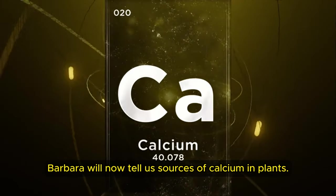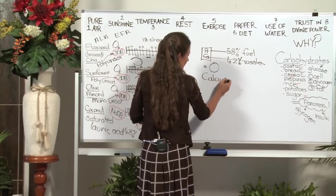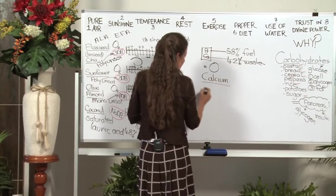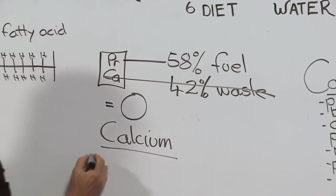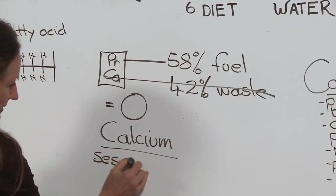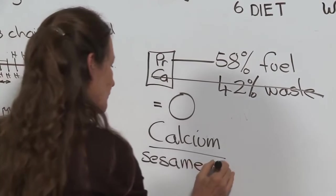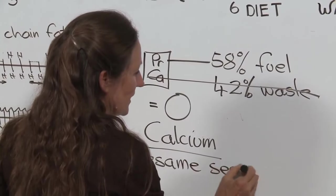Barbara will now tell us sources of calcium in plants. Let's have a look at calcium. Calcium in the vegetarian kingdom is highest in the sesame seed. And a very nice way to eat the sesame seed is as tahini.